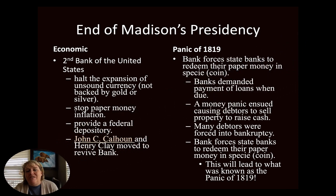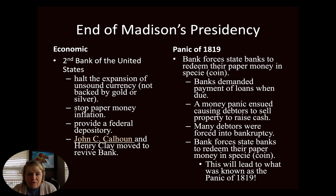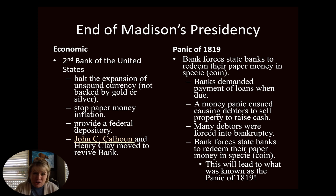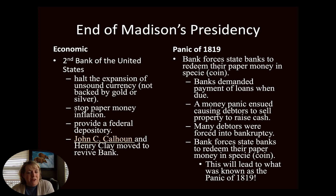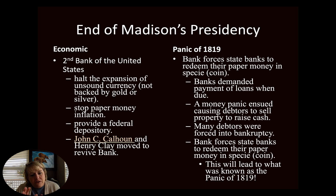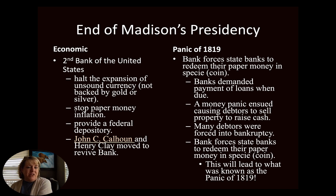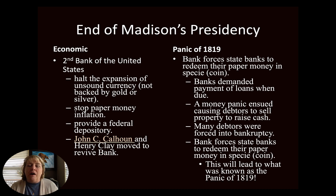As we come to the end of Madison's presidency, there are some economic decisions that are going to have a long-term effect that Monroe is going to have to deal with. The Second Bank of the United States was basically passed because there was unsound paper currency being created that was not backed by gold or anything, so it didn't have much value — that's what happened when the first bank closed down. It's going to stop the inflation of paper money, because they kept producing more and more, and the more you have, the less it's worth. That drives prices up and the value of the dollar goes down. It's also going to get us back to having a federal depository — a place where the government can put their money, make interest off it, and pay loans. This is going to lead to an economic panic that Monroe is going to have to deal with. The Panic of 1819 is a direct result of the Second Bank of the United States.